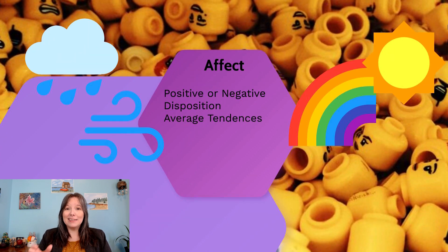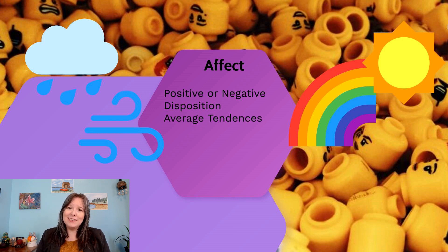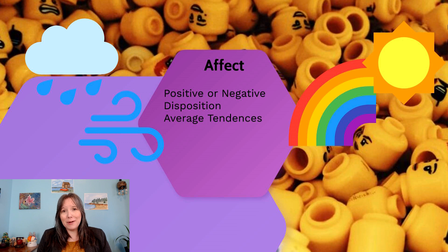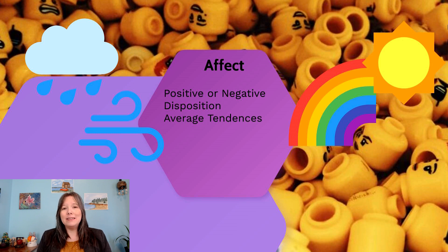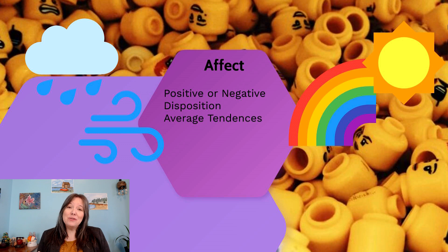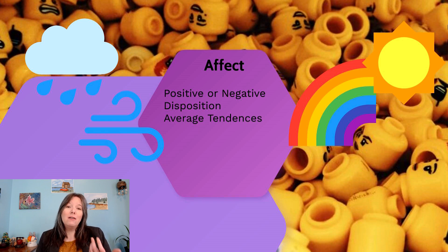A third dimension of temperament, as considered by Thomas and Chess, is affect. This isn't how strong your emotions are, but how pleasant or unpleasant your emotions are — dispositionally, some of us are just happier. Some see sunshine and rainbows; others see doom and gloom. Even as young infants, some wake up cooing and giggling while others are always screaming. As we move into childhood and adulthood, some people are just more optimistic and cheerful, while others are more negative. Aside from anything situationally happening, their natural disposition is to be more upbeat or more downbeat.